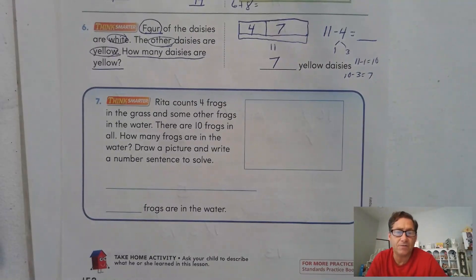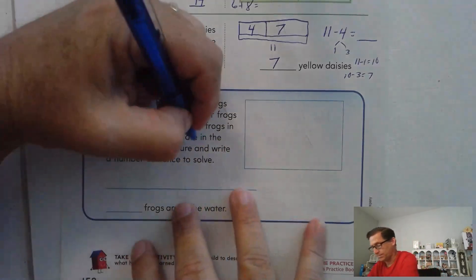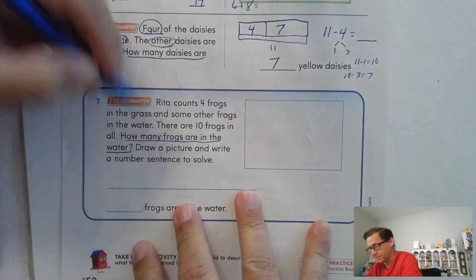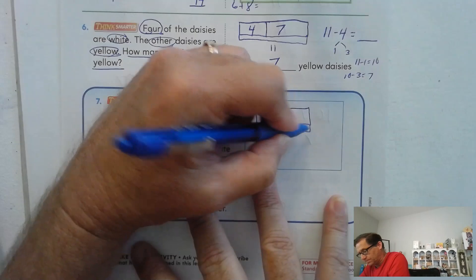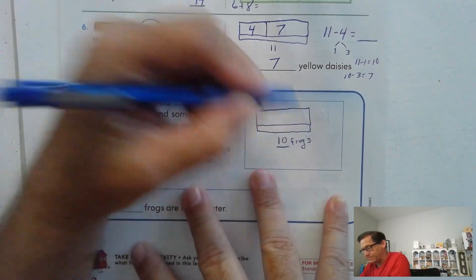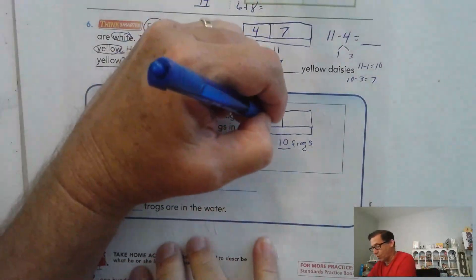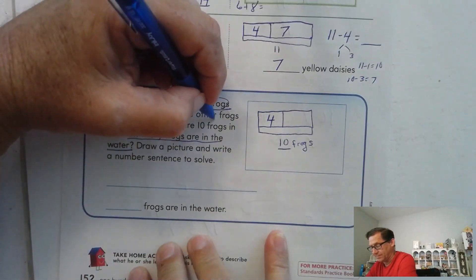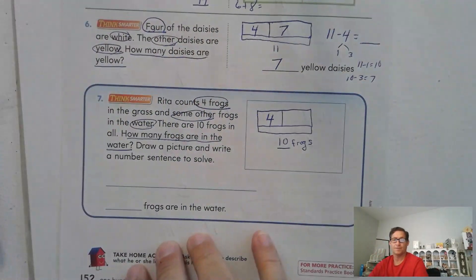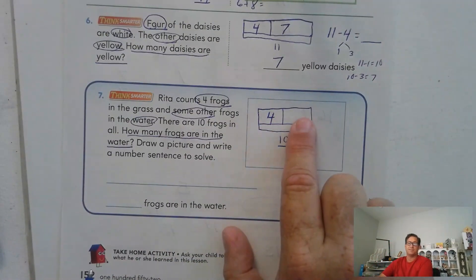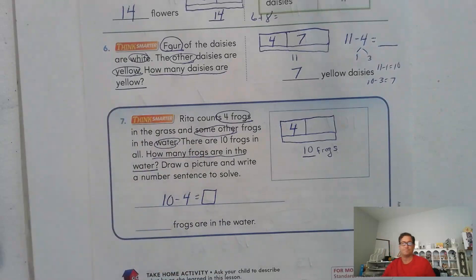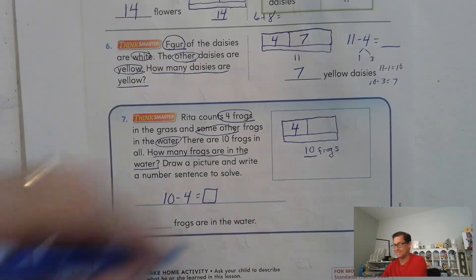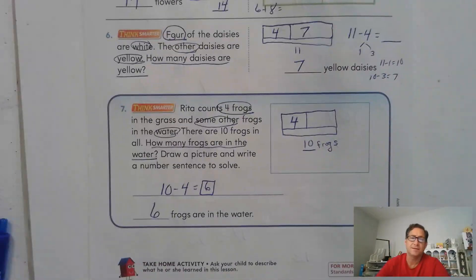And finally, number 7. Rita counts 4 frogs in the grass and some other frogs in the water. There are 10 frogs in all. How many frogs are in the water? Okay, so we know there are a total of 10 frogs. There are 4 in the grass. And then some others in the water. So we basically have this box plus this box has to equal 10. Well, my math problem could be simply 10 minus 4 equals what? Well, that's a basic math fact, right? 4 plus 6 is 10. So there has to be 6 frogs in the water.